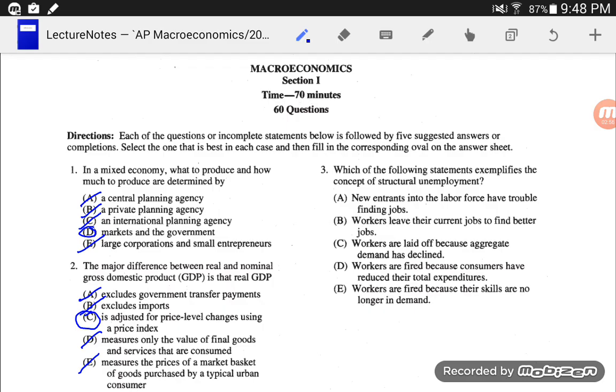Number three, which of the following statements exemplifies the concept of structural unemployment? Structural unemployment is the idea that some people don't have the right skills that they need for a job. Not new entrants, that's really frictional unemployment. Same with workers leaving their jobs to find better jobs. If workers are laid off because of aggregate demand declining, that's cyclical unemployment. Workers are fired because consumers have reduced their total expenditures, that's essentially the exact same thing that C said. The only answer left is E. Workers laid off or fired because their skills are no longer in demand. And that is structural unemployment.